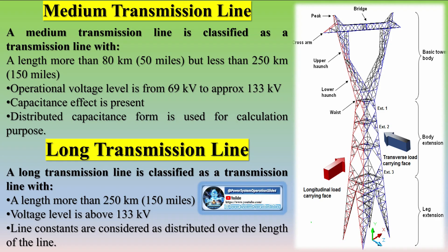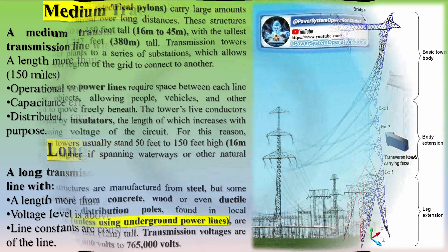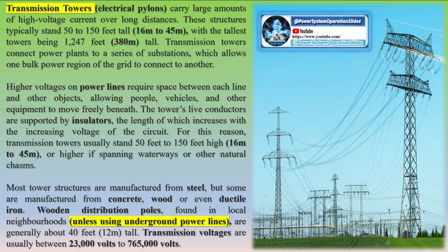A medium transmission line is classified as a transmission line with a length more than 80 kilometers or 50 miles but less than 250 kilometers or 150 miles. The operational voltage level is from 69 kV to approximately 133 kV. Capacitance effect is present, and distributed capacitance form is used for calculation purposes.